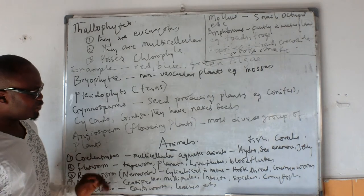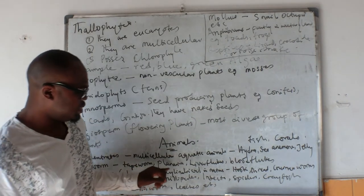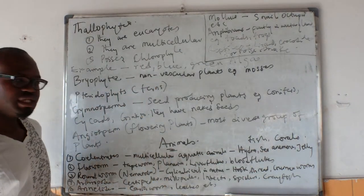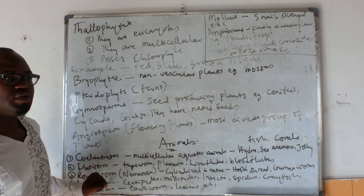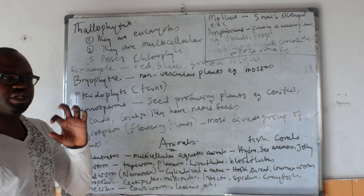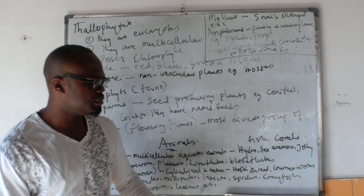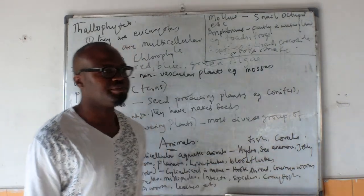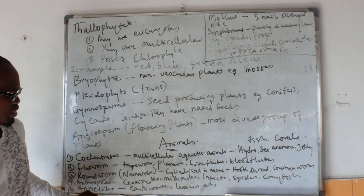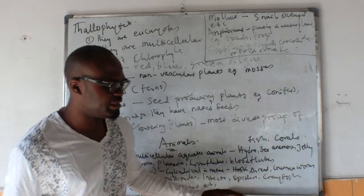We have the flatworms, with examples like the tapeworm, the planaria, liver fluke, and the blood fluke. Then we have the roundworms, which can also be called the nematodes — they are cylindrical in nature. Examples include the hookworm, the threadworm, and the pinworm. Then we have the arthropods, under which we have the centipedes, the millipedes, the insects, the spiders, and the crabs.